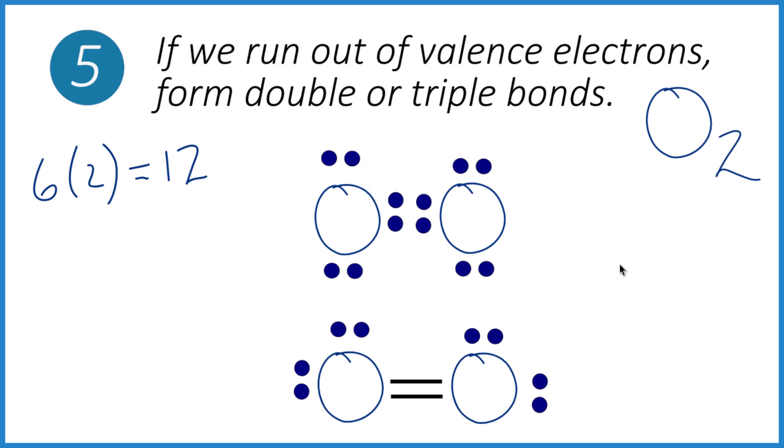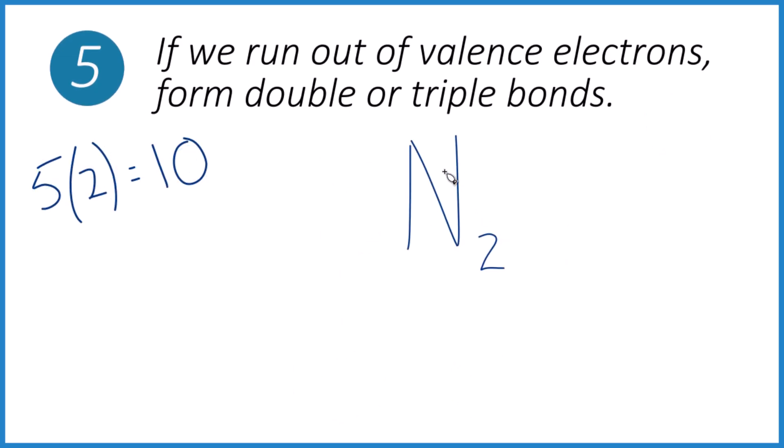All right. So now you try one. N2. We have 10 valence electrons. And to give you a hint, you probably need a triple bond.